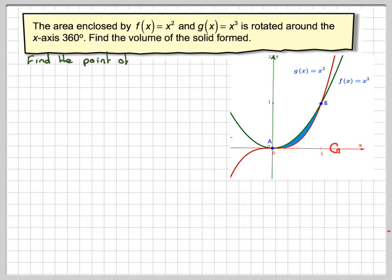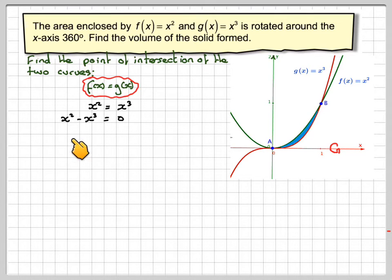First, we want to find the points of intersection. To find the points of intersection we put f(x) equal to g(x). So we've got x² = x³. To solve that we put it equal to zero.